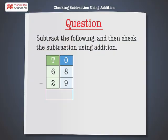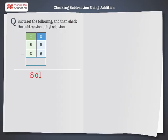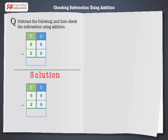Subtract the following, and then check the subtraction using addition. 68 minus 29. Let's solve the problem. 68 minus 29.